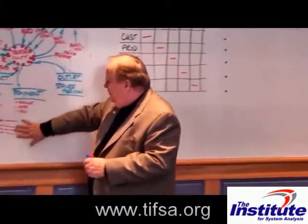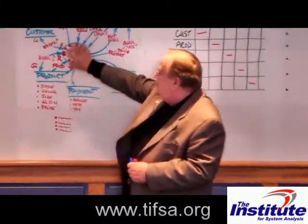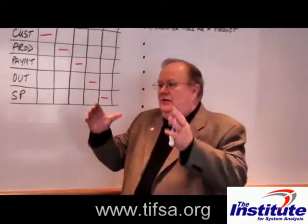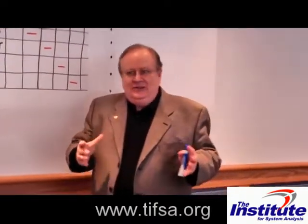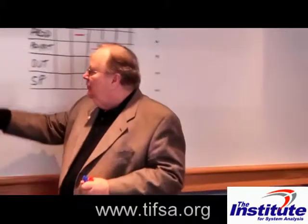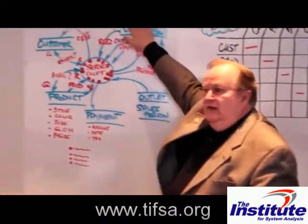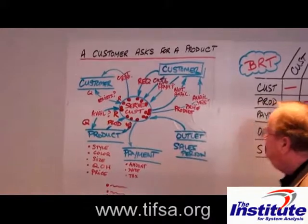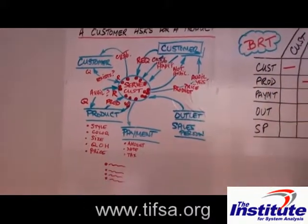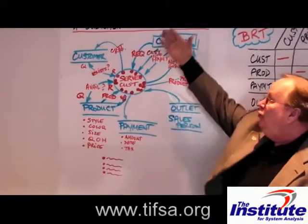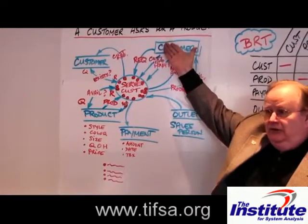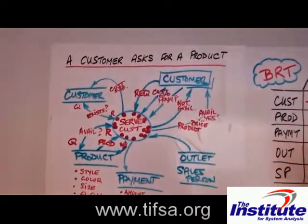The last thing we do after we write the narrative is to give it a name. We give it a good strong name with a verb-noun construct. Now it's different because we're dealing with the process, whereas the event never starts with a verb. So this process then supports the event, the circumstance, or the situation we have to deal with.